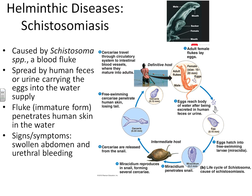We have one helminth disease of the cardiovascular and lymphatic system called schistosomiasis. This is caused by a blood fluke. In order to get the blood fluke, all you have to do is swim in infected water. When a human has a blood fluke, the feces of that infected human ultimately ends up in the water supply. The fluke will then penetrate the skin of another human, move through the body by way of the cardiovascular system, affecting every organ in the body. The typical initial sign is going to be an extremely swollen abdomen from all of the organs being irritated. Schistosoma is also known to affect male urethras, leading to urethral bleeding, which is a pretty unique side effect of any infection.